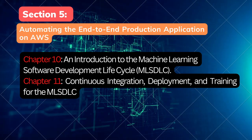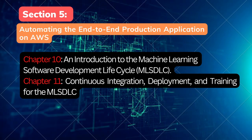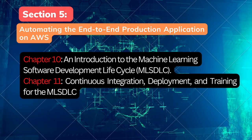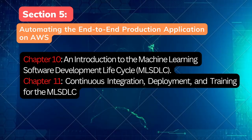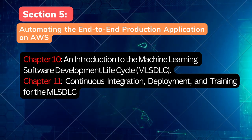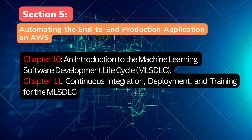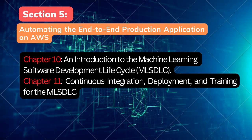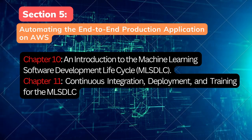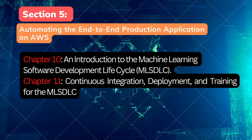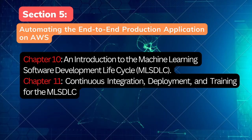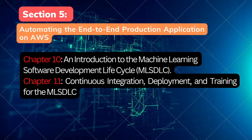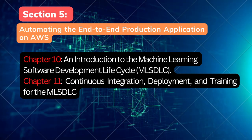Section 5 covers Automating the End-to-End Production Application on AWS, including Chapter 10 and Chapter 11. Chapter 10, An Introduction to the Machine Learning Software Development Lifecycle (MLSDLC), introduces the MLSDLC methodology and explains why adopting it is important for automating ML-based applications. It highlights the key success criteria for MLSDLC implementation — the Cross-Functional and Agile team — and showcases this by walking through each team member's roles and how they interact.